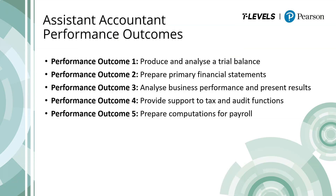The Assistant Accountant Occupational Specialism has five performance outcomes. Each performance outcome is broken down into a number of skill statements — these are what your students are expected to be able to do or demonstrate. There are also a number of underpinning knowledge statements, which are what your students need to know and understand in order to be able to demonstrate the skills.